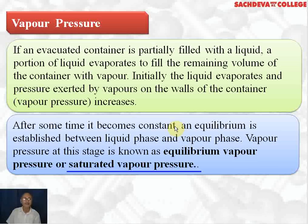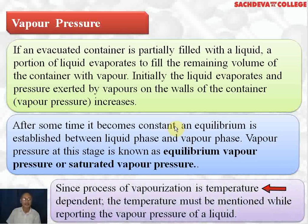The vapor pressure exerted by vapors at this stage is called equilibrium vapor pressure, also called saturated vapor pressure. Since vaporization is temperature dependent — higher the temperature, faster the vaporization — that is why rain comes in summers: water evaporates, forms clouds, and on condensation rain comes. The temperature must be mentioned while reporting vapor pressure because vapor pressure increases with increasing temperature and decreases with decreasing temperature.